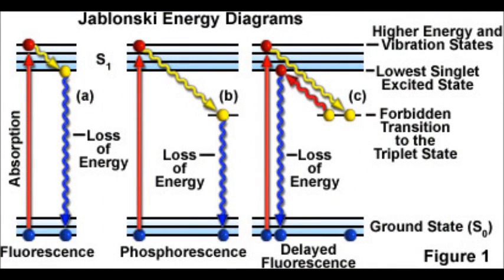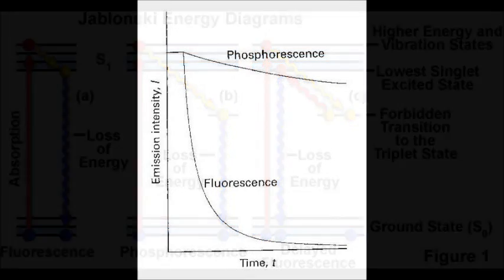The electron then relaxes back down to ground state. Energy emission occurs for both phosphorescence and fluorescence. The rate of emission over time is quicker for fluorescence than phosphorescence according to the graph.